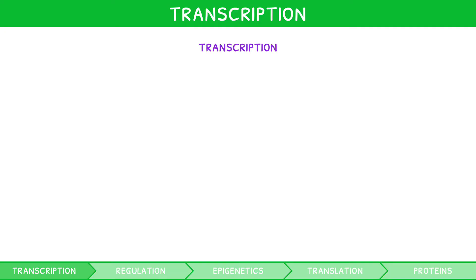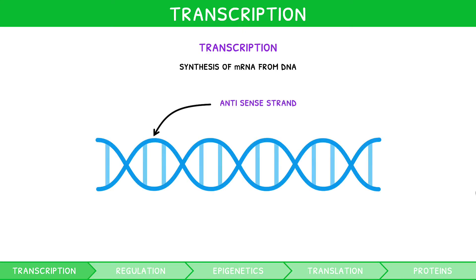In this video, we introduce the process of transcription as the synthesis of mRNA from DNA. Let's re-explain the process by adding a few more details. One strand of the DNA to be transcribed is referred to as the antisense strand, and the other the sense strand. The sense strand runs in a 5' to 3' direction, and is the strand that will be identical to the transcribed RNA, except for thymine in place of uracil.